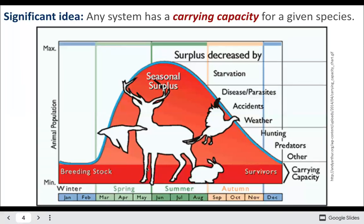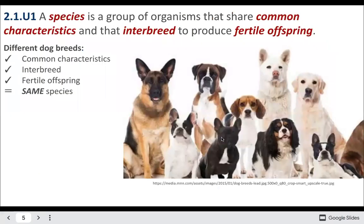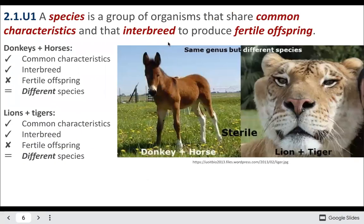Carrying capacity will change based on available resources, and as those resources change, you might get starvation or other effects that change the actual numbers of individuals. Once again, species share common characteristics, and most importantly they interbreed to produce fertile offspring. A mule and a liger, while alive, are sterile — they can't produce offspring, so they're a dead end.